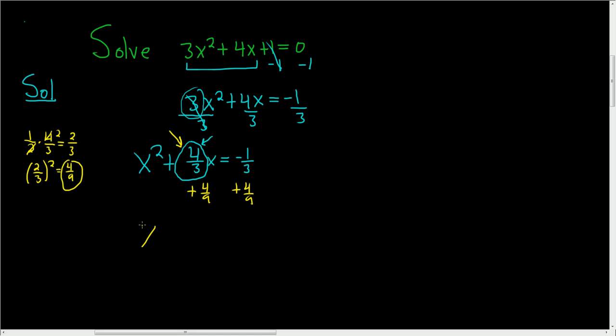On the left-hand side, we end up with x squared plus 4 thirds x plus 4 ninths. And on the right-hand side, we have negative 1 third plus 4 ninths. Before we go any further, we should probably add these fractions. I'll do it over here.